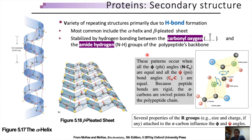Today we are going to discuss the secondary level of protein organization, which is the secondary structure. The secondary structure of a polypeptide consists of several repeating patterns, and these repeating patterns normally emerge as a result of hydrogen bond formation. The most common secondary structures are alpha helix and beta pleated sheets, which emerge from hydrogen bonds between the carbonyl oxygen of one amino acid and the amide hydrogen of another amino acid present in the peptide backbone.